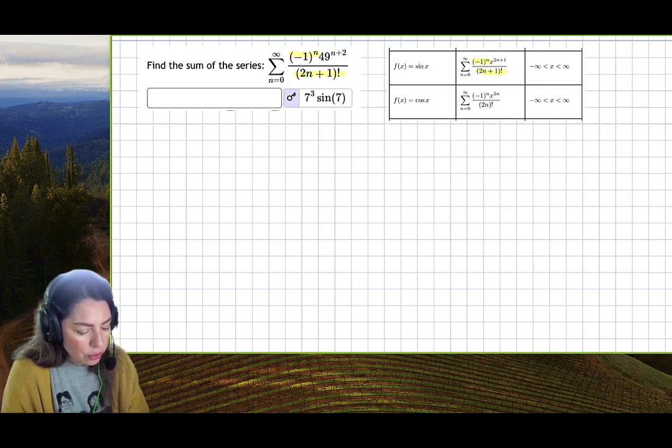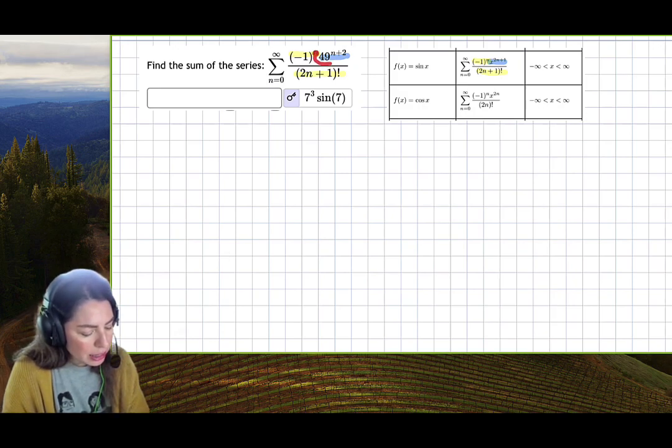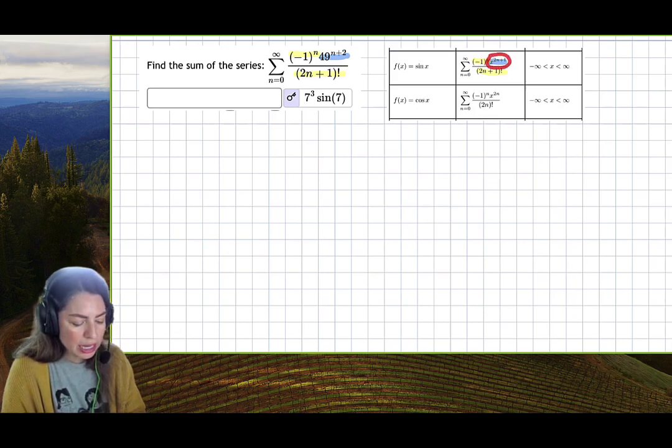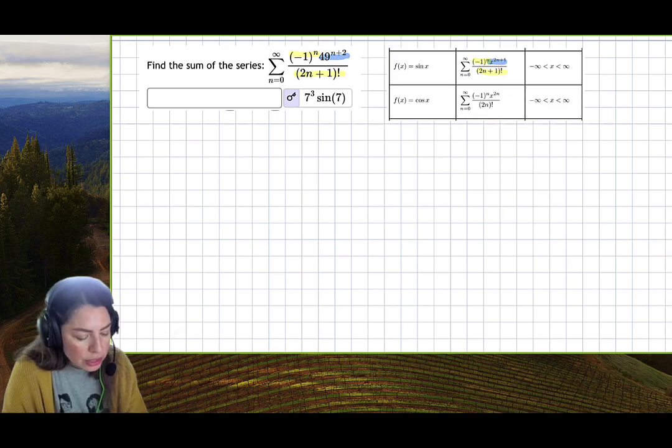The only issue is this x to the 2n plus 1. I have 49 to the n plus 2 left over. I will need to get this 49 to the n plus 2 into the x to the 2n plus 1 form.